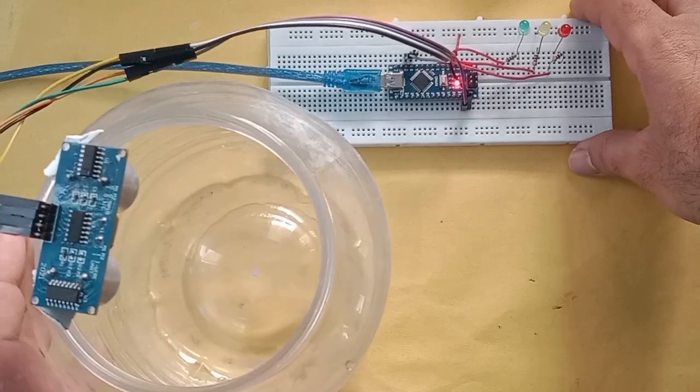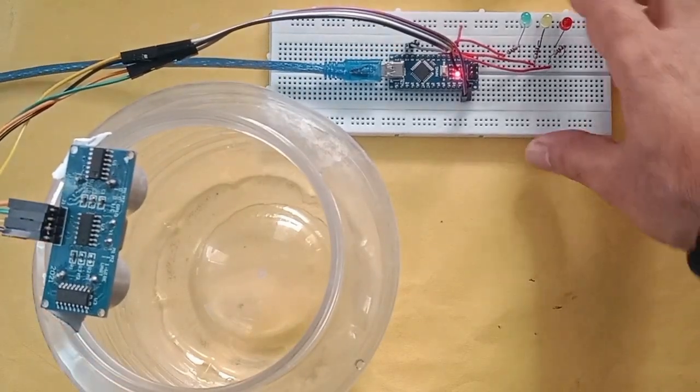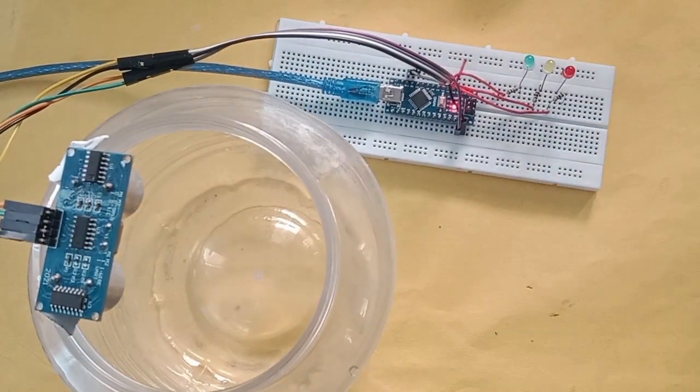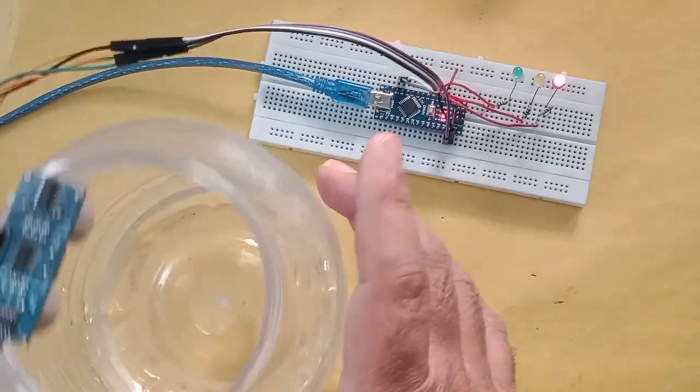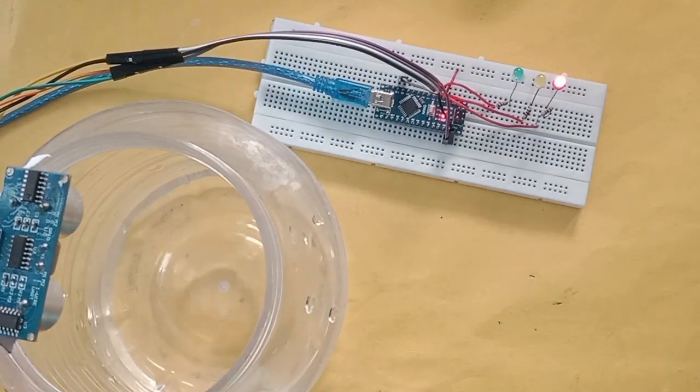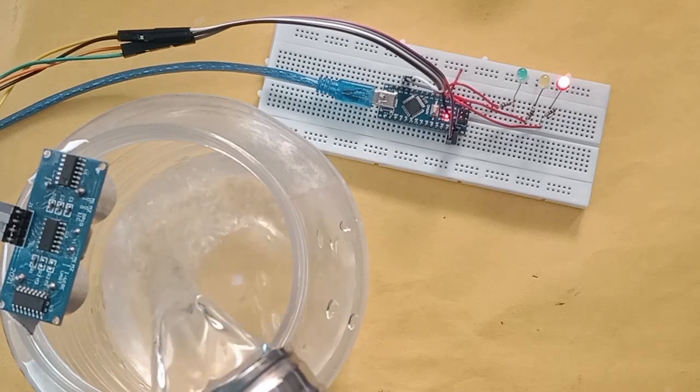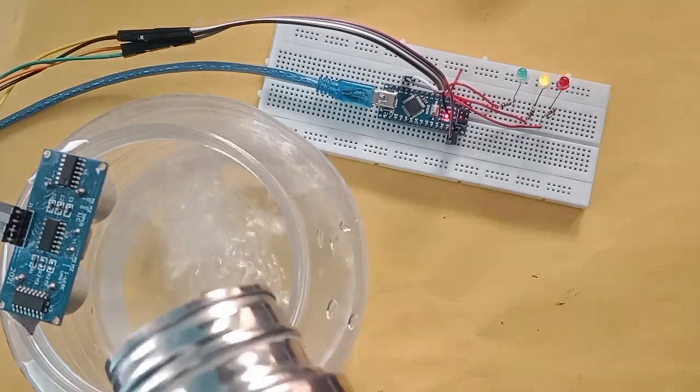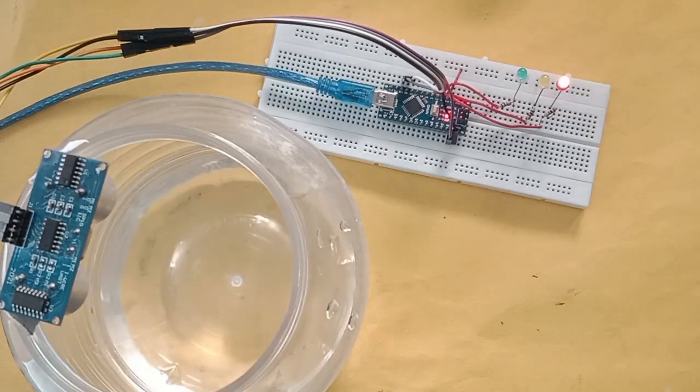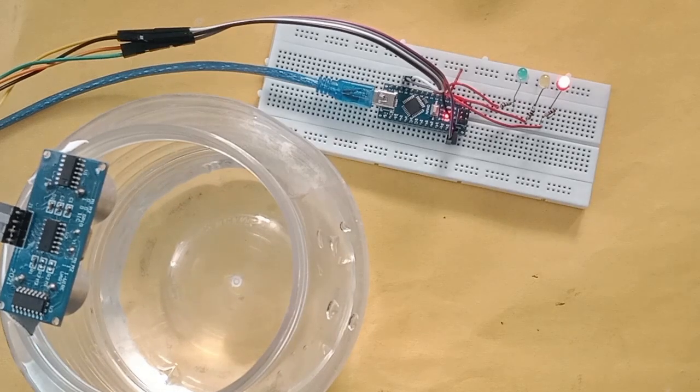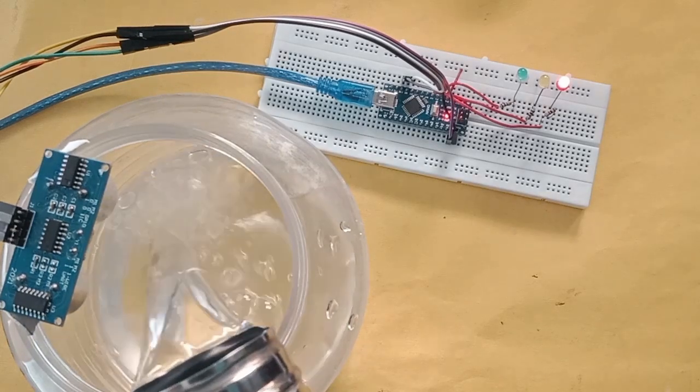Ideally the red LED should glow but it is not glowing. The reason was the resistor was not connected to the longer pin of LED. Now you see here, water level is still less than 30 percent, red LED is glowing. I am putting more water into it.